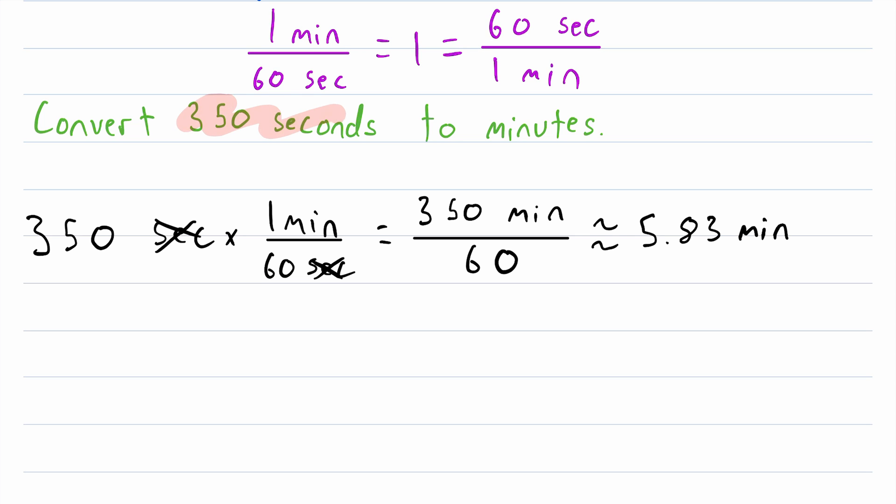So to convert seconds to minutes, all you have to do is multiply that amount of seconds by the conversion factor that has seconds in the denominator. Effectively, all you're doing is dividing the number of seconds by 60, and then that is the number of minutes that it is equal to.